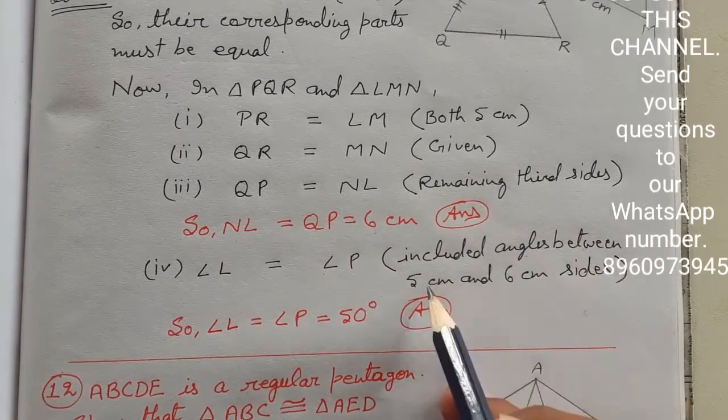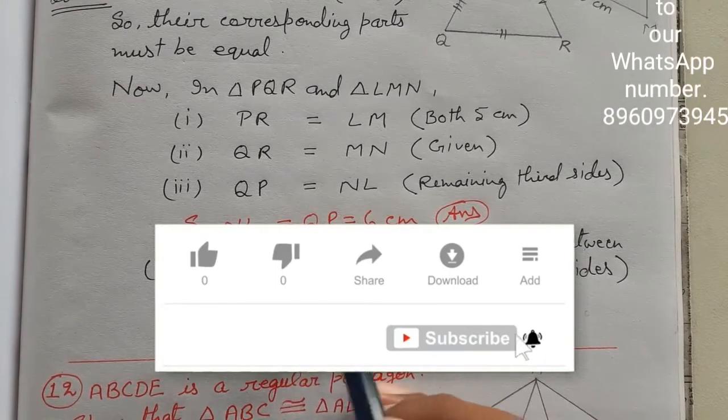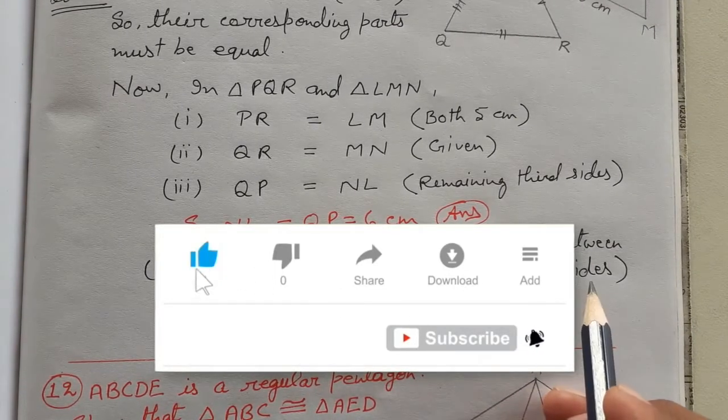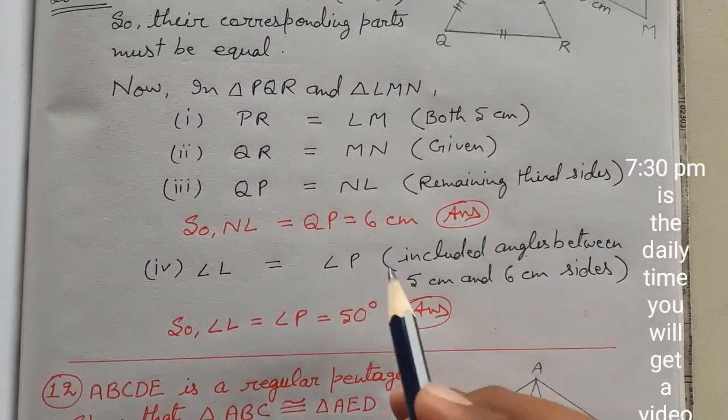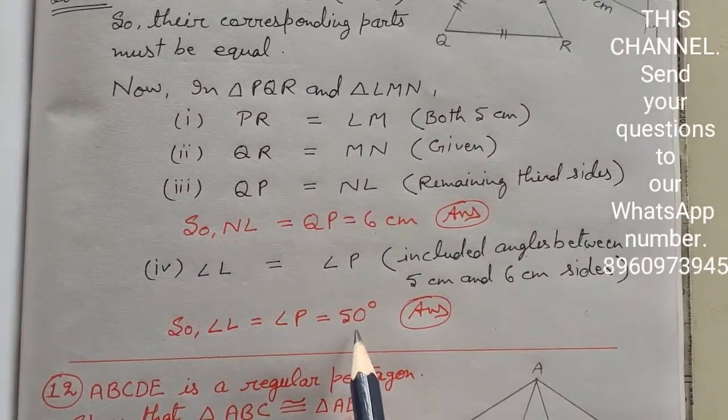I've written the reason here: angle L equals angle P because it is the included angle between 5 centimeter and 6 centimeter sides. Both these angles in the figure are between the 5 cm and 6 cm sides, so they must also be equal. So angle L's value will be 50 degrees. Thank you.